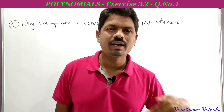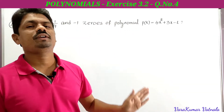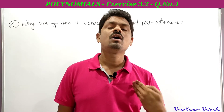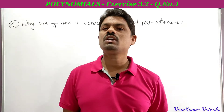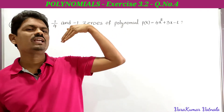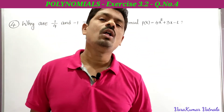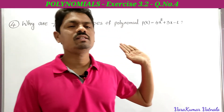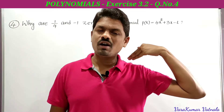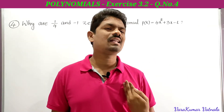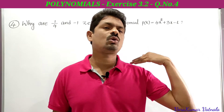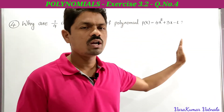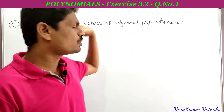He is asking why 1/4 and -1 are the zeros of p(x). Suppose if we replace x with 1/4 in p(x) and we get p(1/4) = 0, then we can decide 1/4 is a zero of p(x). In the same way, if we substitute x = -1 in p(x) and get p(-1) = 0, then we can decide -1 is also a zero of p(x). Simply substitute x = 1/4 and then x = -1.